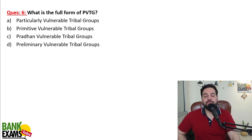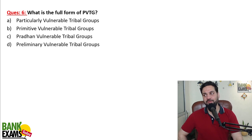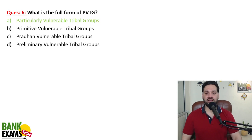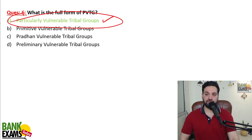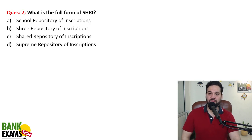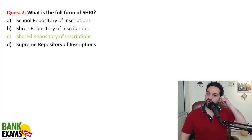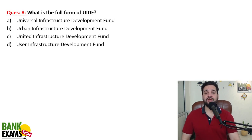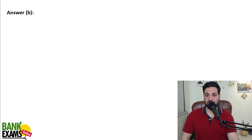What is the full form of PVTG? Many full forms will be asked in exams. PVTG stands for Particularly Vulnerable Tribal Groups — please remember it, it can come in the exam. SHREE stands for Shared Repository of Inscriptions. UIDF stands for Urban Infrastructure Development Fund.